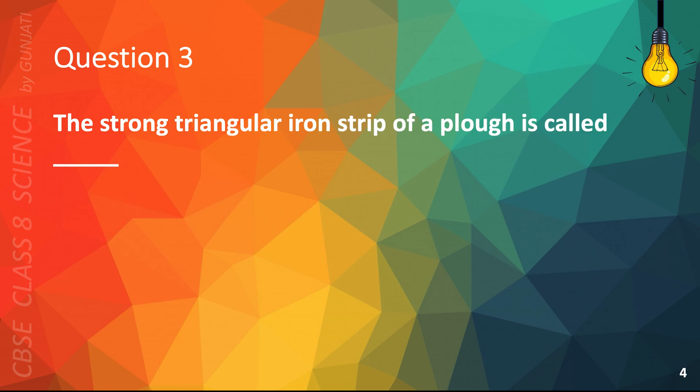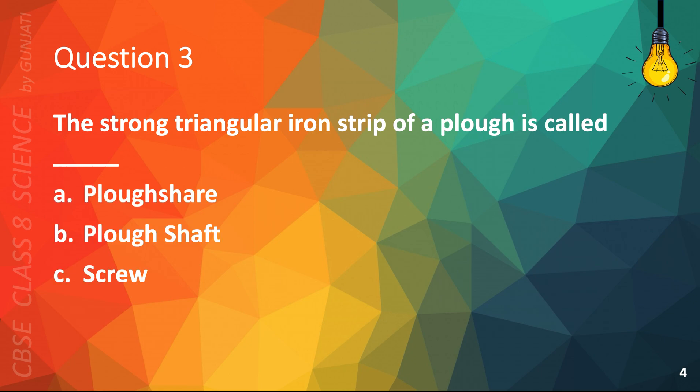The strong triangular iron strip of a plow is called A. Plowshare, B. Plowshaft, C. Screw, or D. Knife. The correct answer is A. Plowshare.